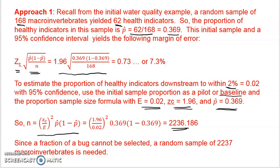Again, you cannot select a portion of a bug, 0.186 of a bug. So you can only select whole numbers of bugs, and what we need to do here, the simple rounding rule, always round up. So round this up to 2,237. That says to estimate the proportion of healthy indicators to within 2%, a random sample of 2,237 macroinvertebrates is needed.